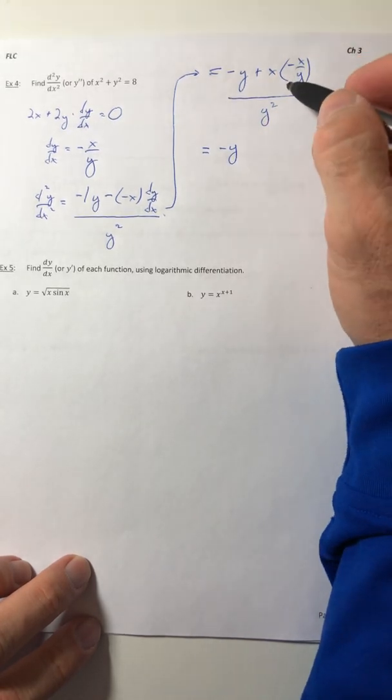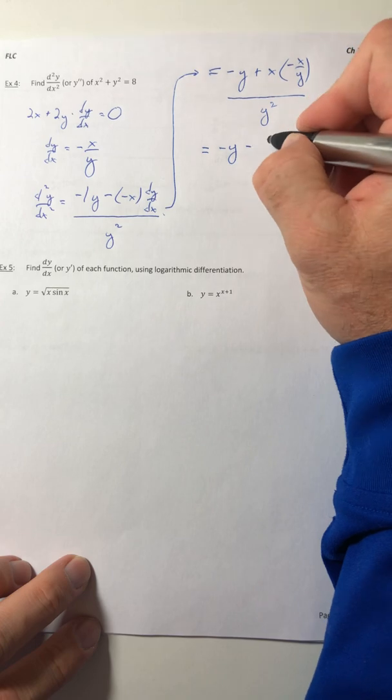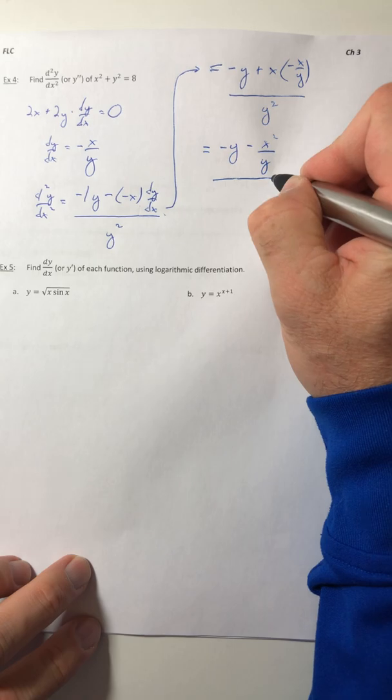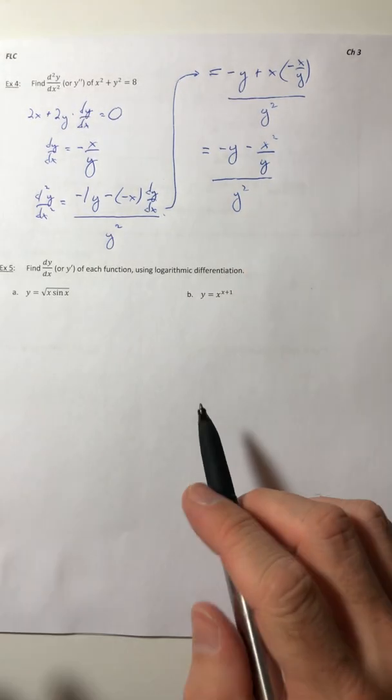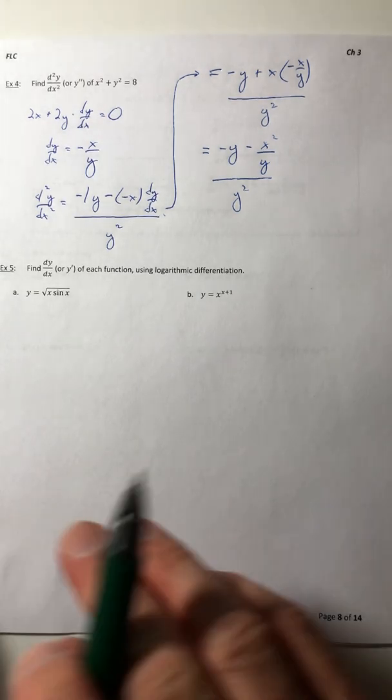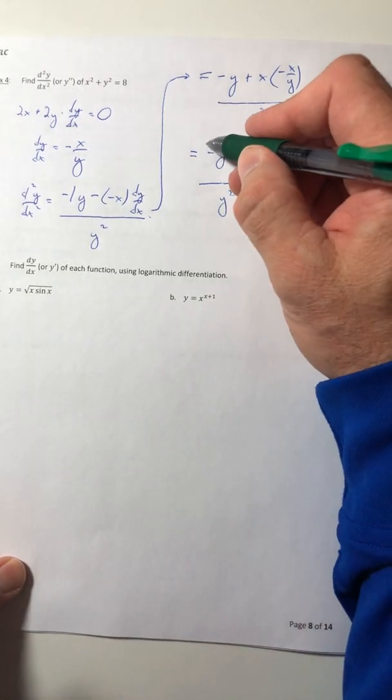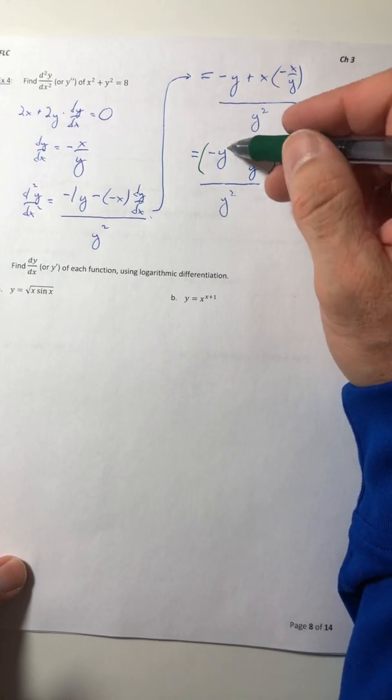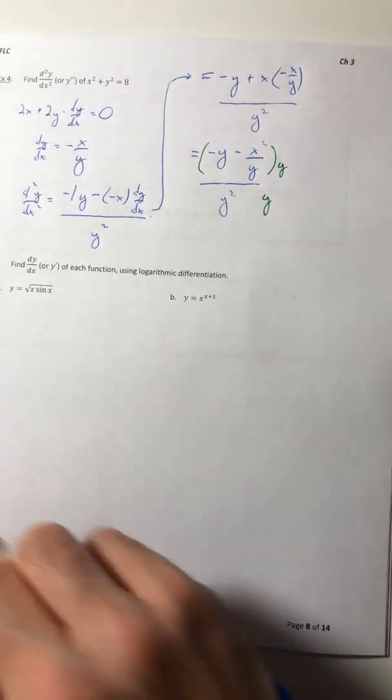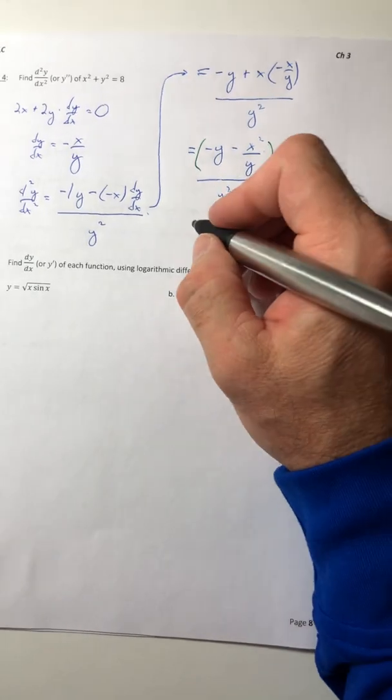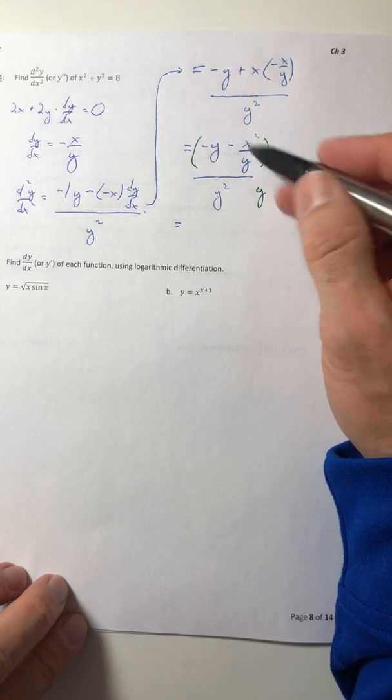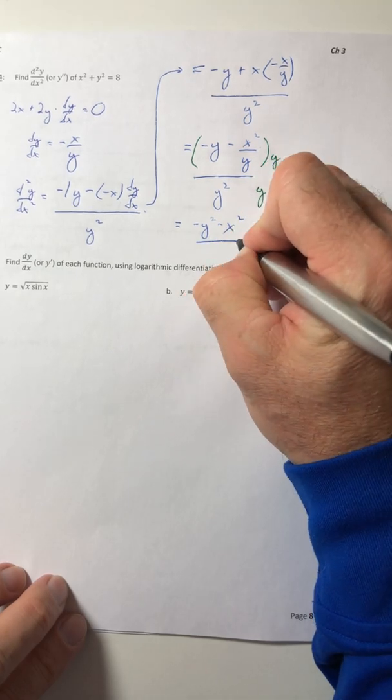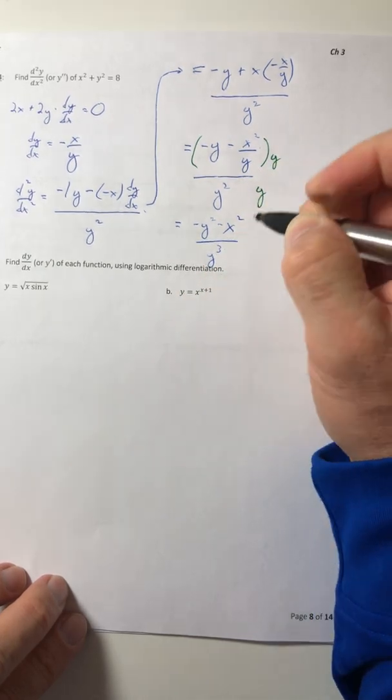And it's still over y squared. So I'll multiply that out. So negative y minus x squared over y over y squared. And I still need to keep simplifying because I can't leave a fraction within a fraction. So let's multiply the top and the bottom by that common denominator of just the y so I can clear this little fraction out. So negative y squared minus x squared over y to the third.